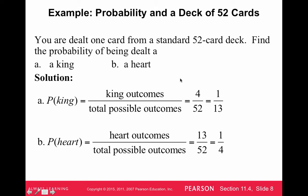Let's do another one from the standard 52-card deck. Find the probability of being dealt a king. In the 52-card deck, there are four kings, and there are 52 possible cards. 4 divided by 52, if we reduce that, is 1 over 13.